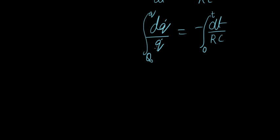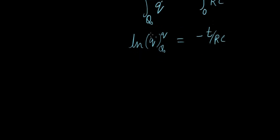So what do you get when you integrate this? Natural log of Q prime going from Q0 to small Q equals minus T over RC. So if we apply these, what happens? Natural log of Q minus natural log of Q0 equals minus T over RC.